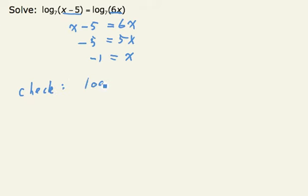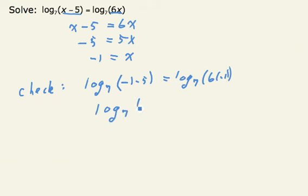On the left-hand side, I have log base 7 of negative 1 minus 5 equals log base 7 of 6 times negative 1. And then both sides yield log base 7 of negative 6.